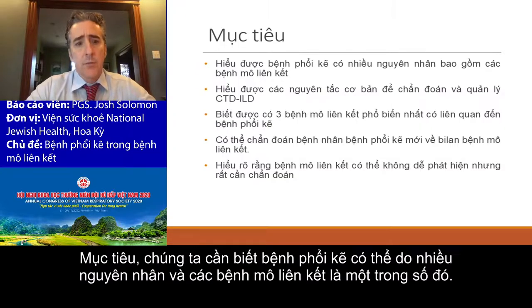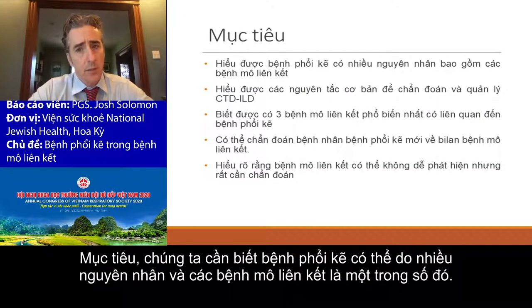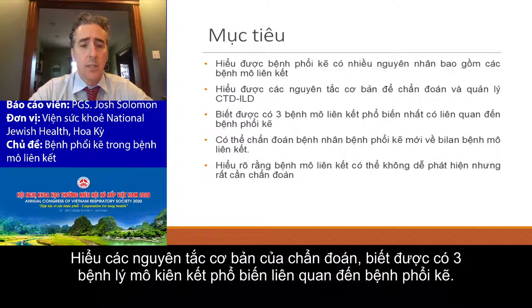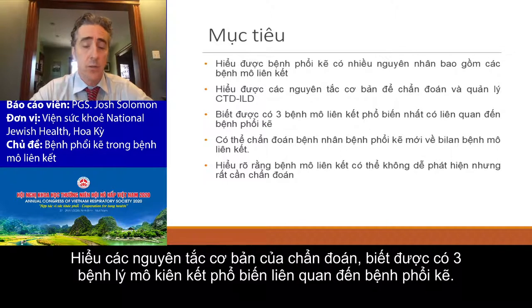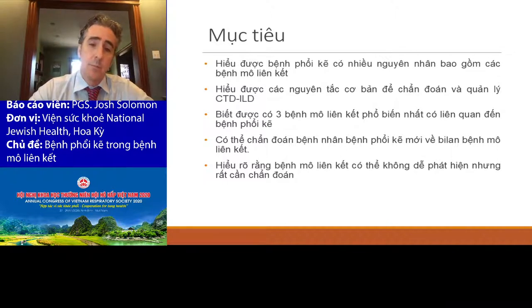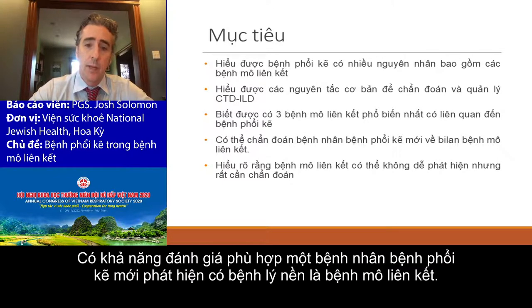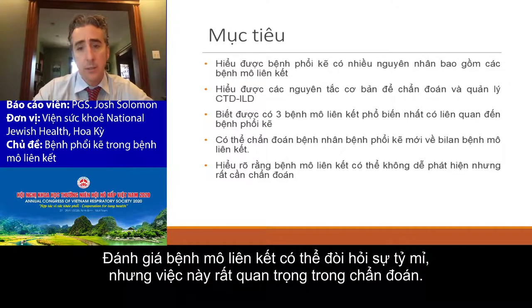The objectives are to recognize that interstitial lung disease can have many causes, and connective tissue is one. Understand the basic principles of diagnosis. Recognize that there are three that are more common to have an associated interstitial lung disease. Be able to appropriately evaluate new ILD patients for underlying connective tissue disease and appreciate that they can be subtle, but they are important to diagnose.